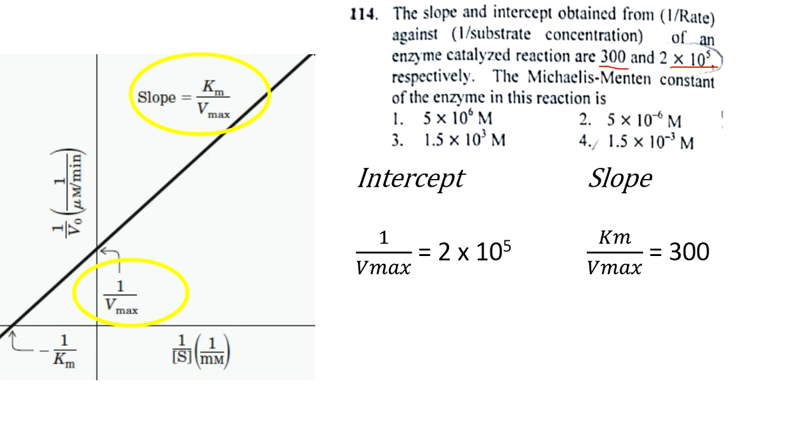From that we can find Vmax, which is 1/(2×10^5) = 0.5×10^-5. From that we can find the Km value: Km = Vmax × slope = 300 × 0.5×10^-5. That is 300 divided by 2, which is 150×10^-5 = 1.5×10^-3. From this we can select the option 1.5×10^-3 M.